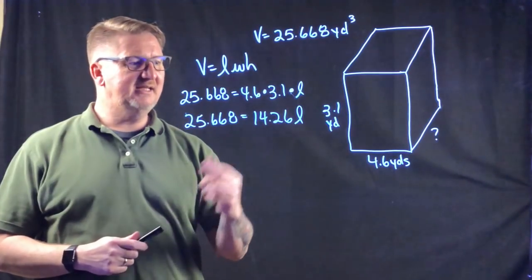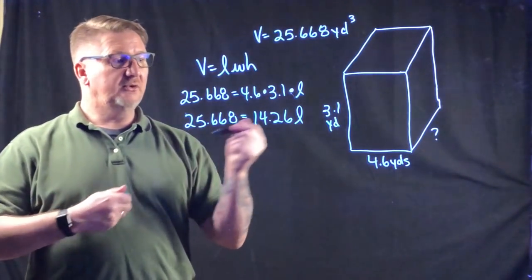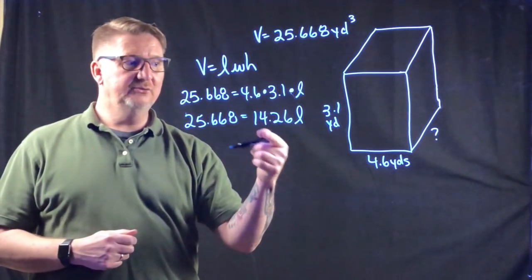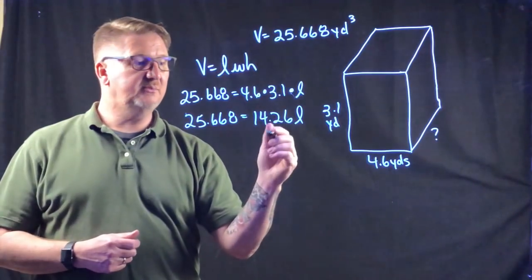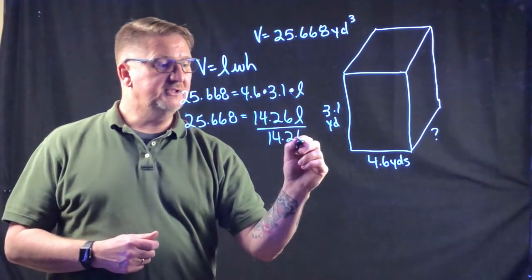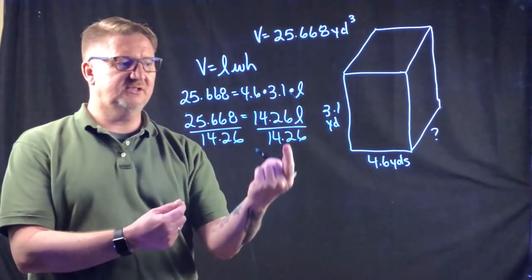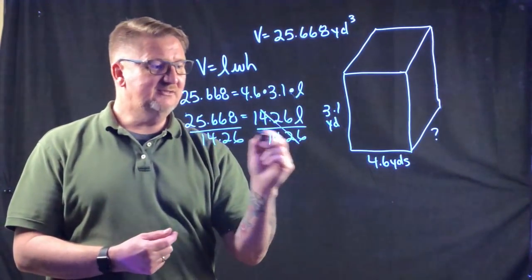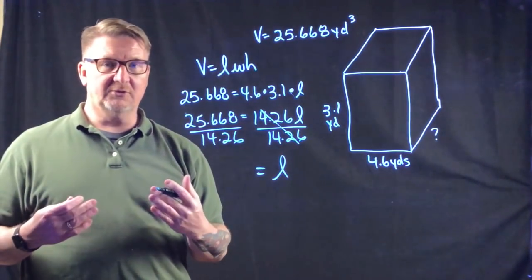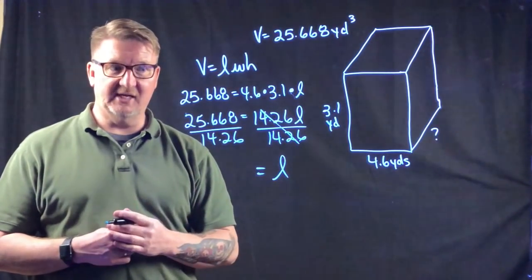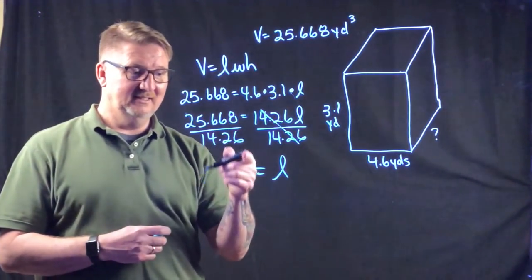To get the unknown length L by itself, I need to undo the multiplication. I divide both sides by 14.26 to keep the equation balanced. The 14.26s cancel out because 14.26 over 14.26 equals 1, and 1 times L is just L.